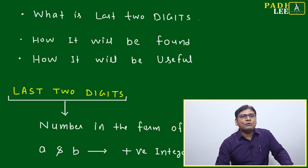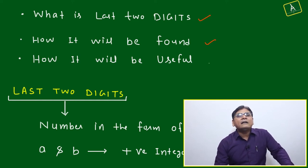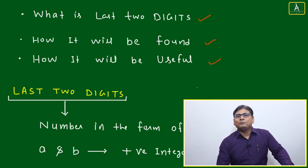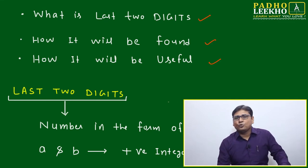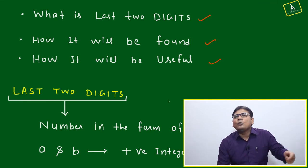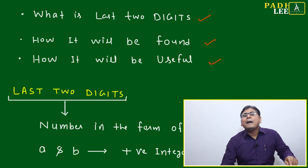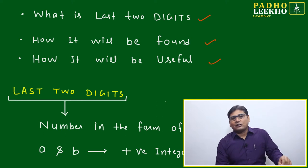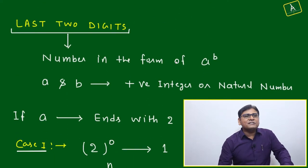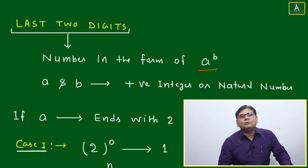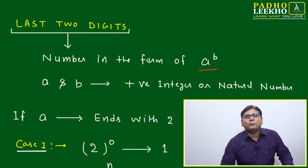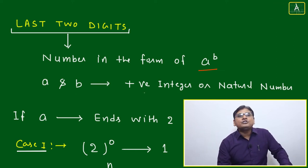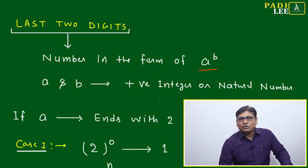In this session, we are going to discuss what the last two digits are, how they will be found, and how they will be useful — the application point of view — how to apply them for different types of questions, and how many categories of questions fall under this shortcut technique. The last two digits concept is always applicable when a number is given in the power A to the power B, where A and B are positive integers.